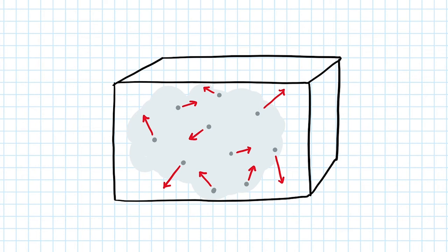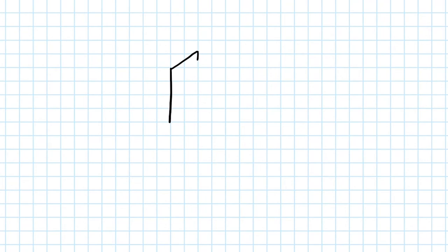Let's zoom in on one single particle and isolate it from the rest of the gas. This particle collides into the wall with a momentum mu, where m is the mass of the particle and u is the velocity.